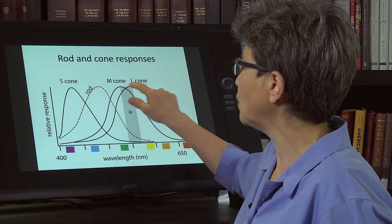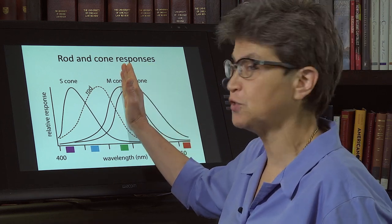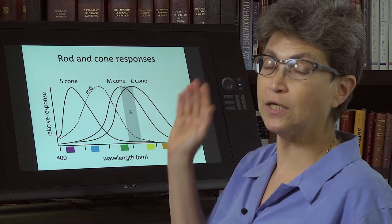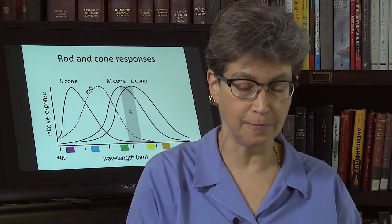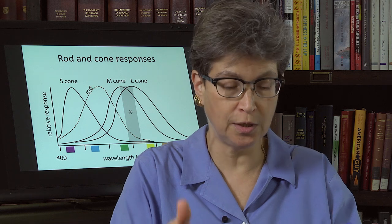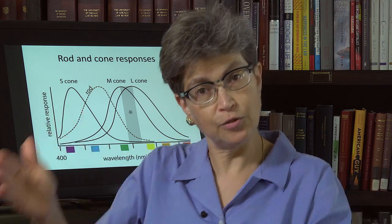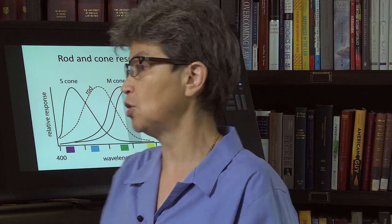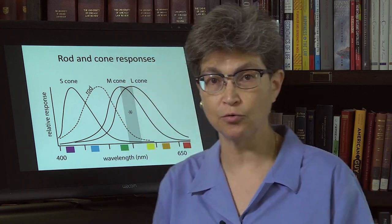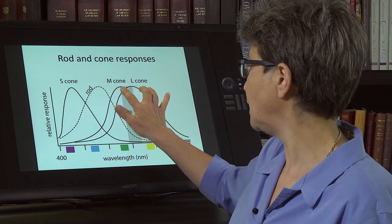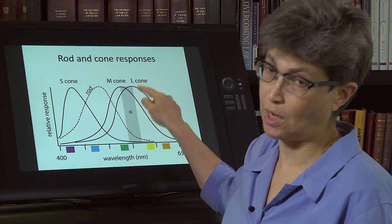Well, whether you lose one of these cones or whether it shifts over, the consequence will be that you will no longer see the difference between, you will no longer perceive the difference between red and green the way that others do. So I can tell the difference between red and green. But if I only had one of these cones, I would not be able to.